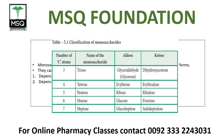Screen par dekh saktay hain number of carbon atoms aur phir unhe kya naam dete hain. Aldose woh jinn mein aldehyde group mojood hoga, aur ketose woh jinn mein ketone group mojood hoga. Agar teen carbon hain to hum naam dete hain triose ka — glyceraldehyde mein aldehyde group rakhtata. Ribose ki misal pentose mein hai, aur ketose mein humara example ribulose ka hai.